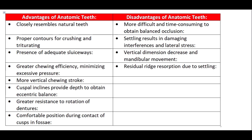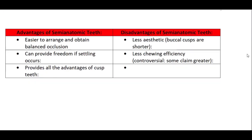Disadvantages of anatomic teeth: first, it is more difficult and time-consuming to obtain a balanced occlusion. Second, settling results in damaging interferences and lateral stresses during jaw movement. Third, the vertical dimension decreases and mandibular movement is affected. Advantages of semi-anatomic teeth: they are easier to arrange to obtain a balanced occlusion, provide freedom if settling occurs, and reduce lateral stresses while providing all the advantages of cusp teeth.